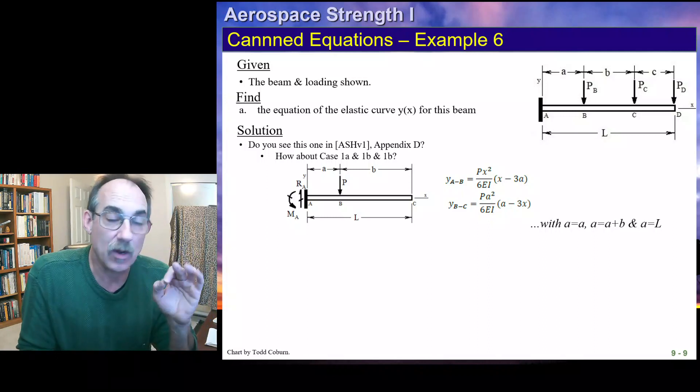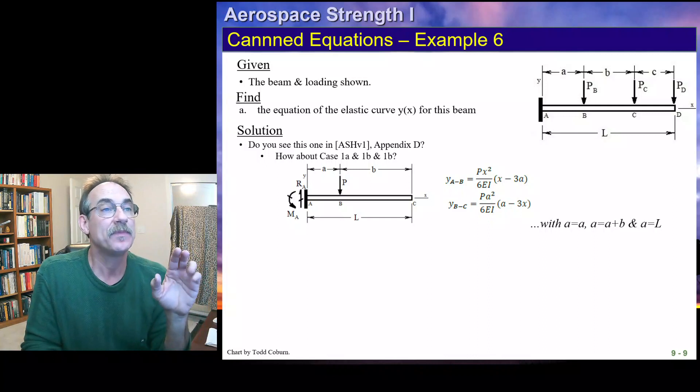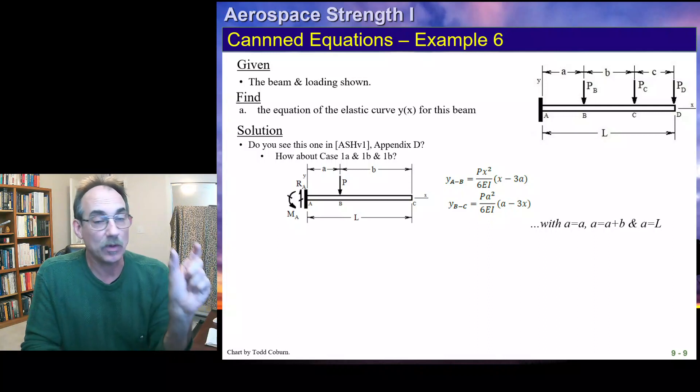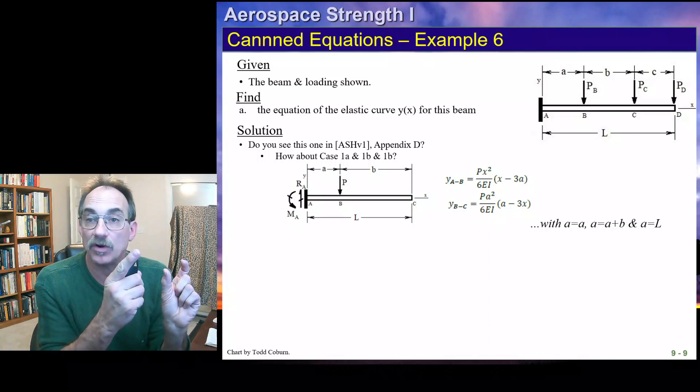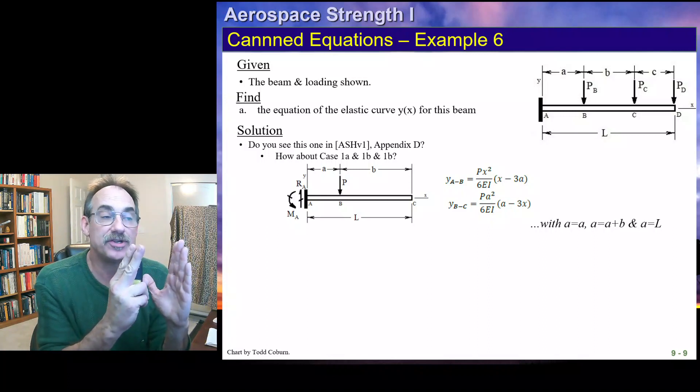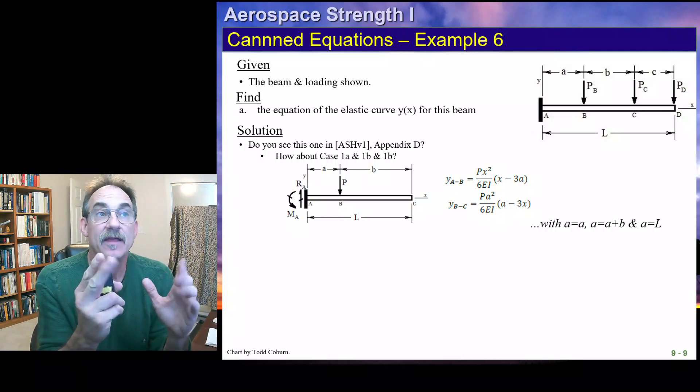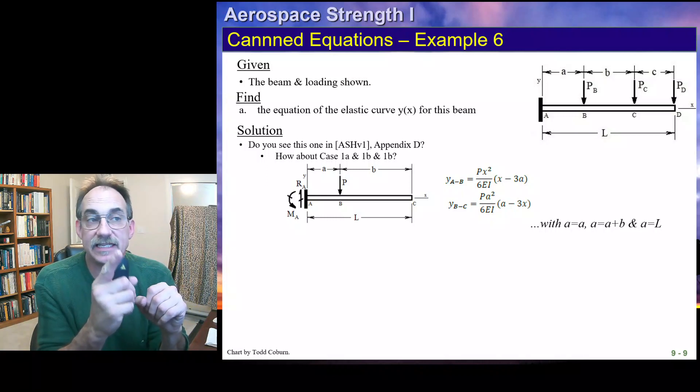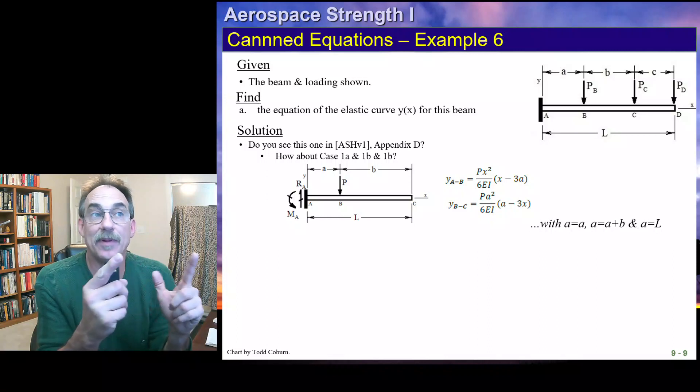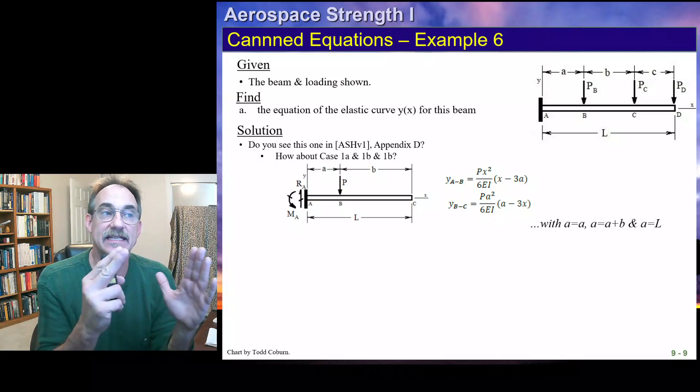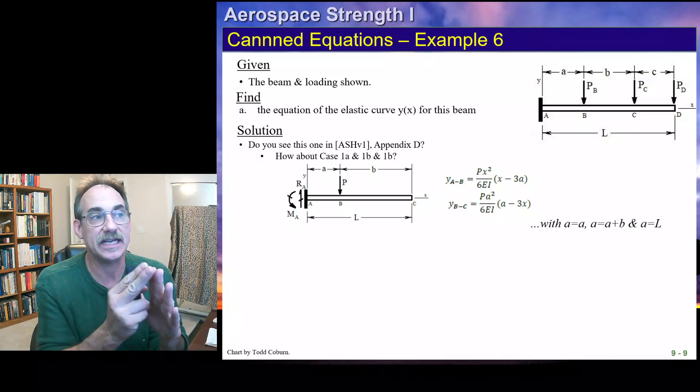However, each point load that we have has a pair of these functions. So if we write our equation for the whole beam, we're going to have to be careful. For example, first we're going to write this beam when A is equal to A. And we're going to do that for our P, B is our force, P. And we're going to have two functions, one for A to B, and one for B to D. Then we write that same equation for P_C. And now our A dimension that we plug into these formulas is A plus B.